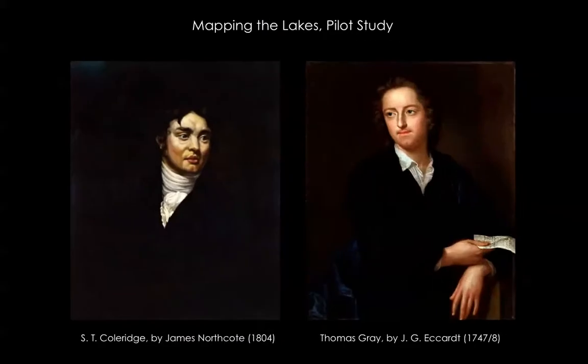This study focused on two canonical accounts of the lakes: Thomas Gray's epistolary journal of his tour of 1769, and the letters and notes Samuel Taylor Coleridge composed during his ramble through the Western Fells in 1802. Creating a GIS of these two texts, which together comprised some 20,000 words, involved a four-step process.